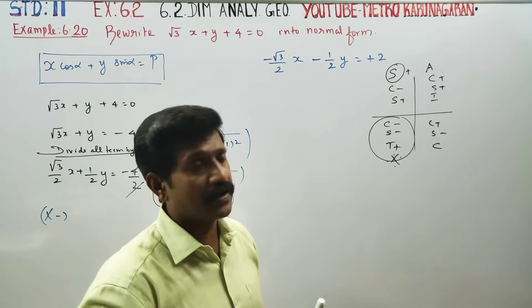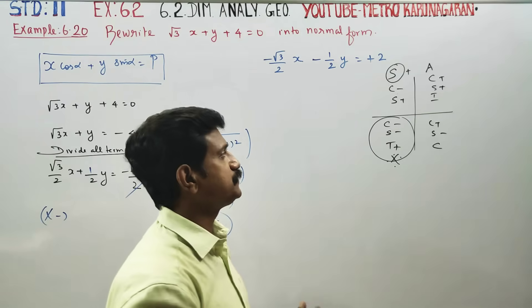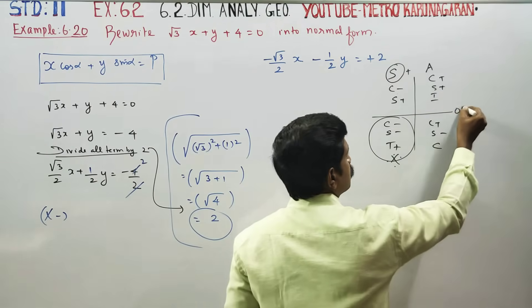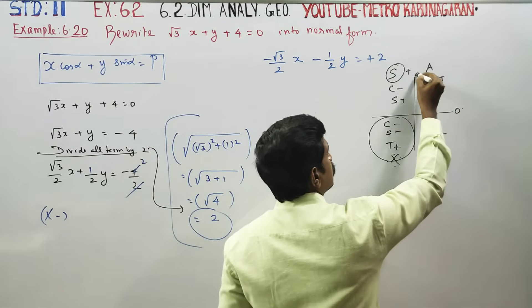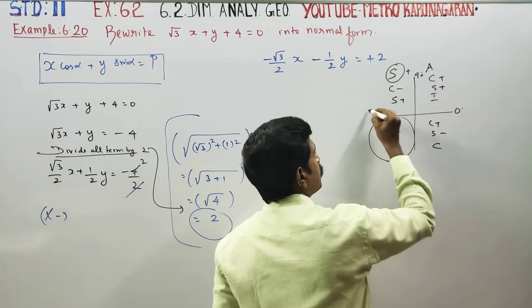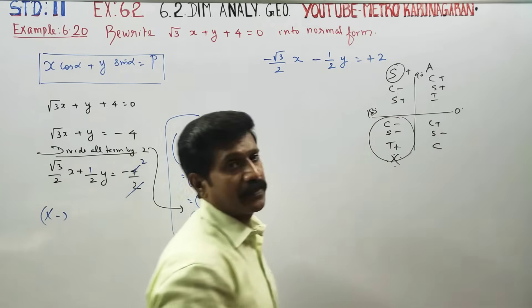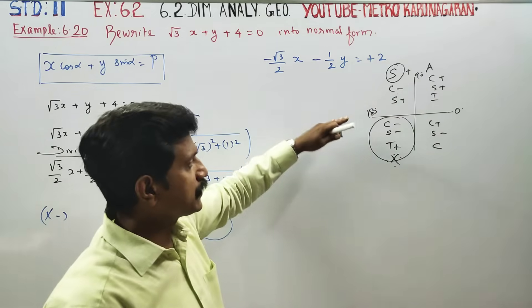Both cos and sin are negative, so α lies in the 3rd quadrant. The angle reference points are: 0°, 90°, 180°, and 210° falls in the 3rd quadrant.